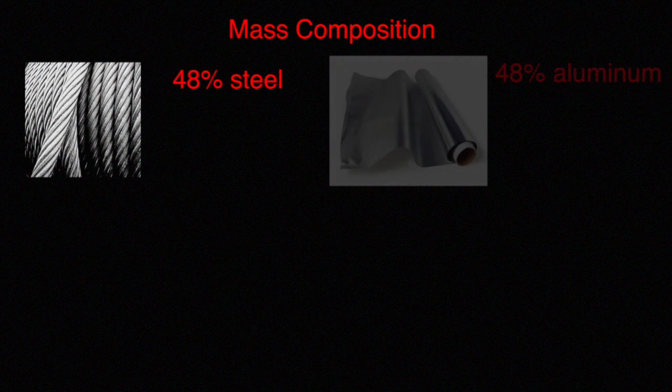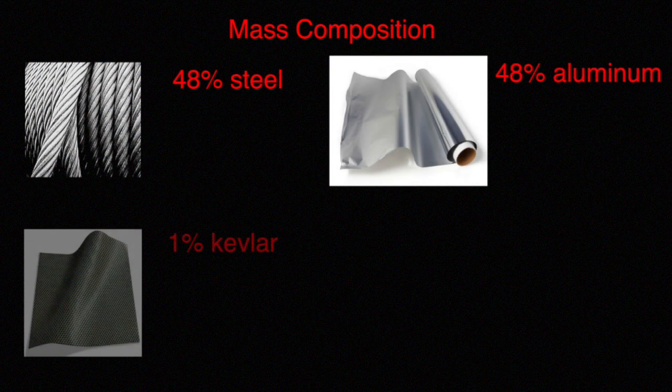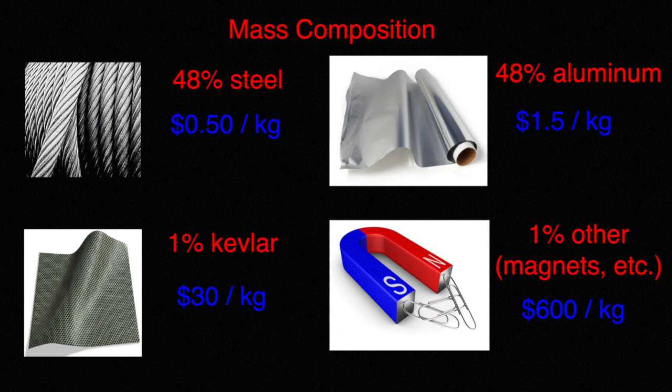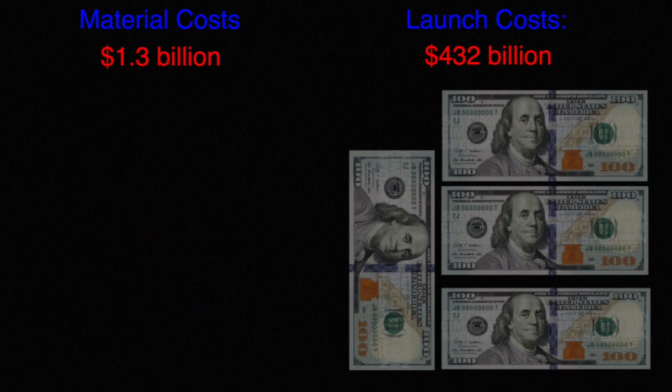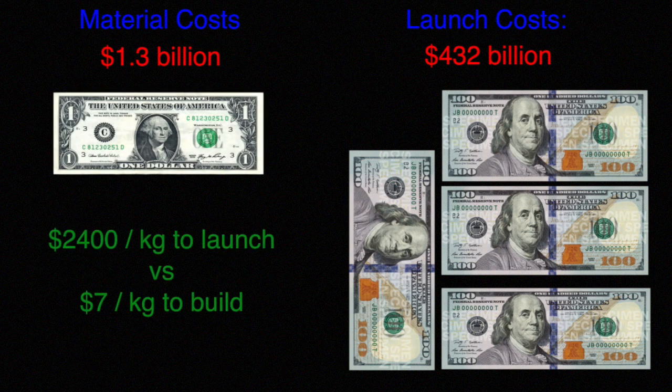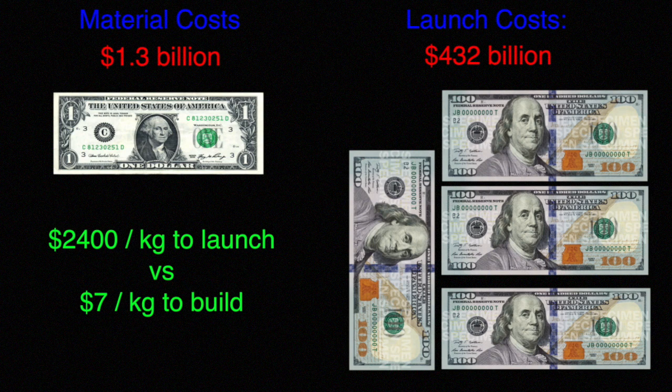The overall space elevator system is about 48% steel, 48% aluminum, 1% Kevlar, and 1% other. The average manufacturing costs of materials works out to just a bit over $7 per kg. Compared to launch costs of over $2,000 per kg, the cost of materials is negligible, adding only $1.3 billion to overall costs, significantly less than 1%.